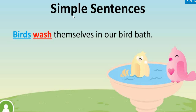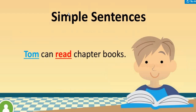'Birds wash themselves in our bird bath.' Birds is my subject, wash is the action verb. My sentence is meaningful with only one subject and one verb, so it is simple. 'Tom can read chapter books.' Tom is my subject, can read is my verb. One subject, one verb, a meaningful sentence — so it is simple.